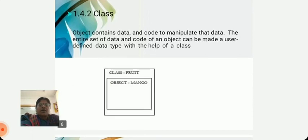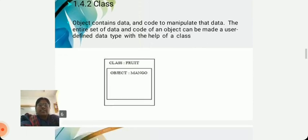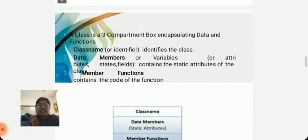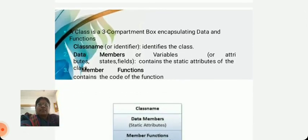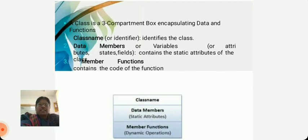Class. Objects contain data and code to manipulate the data. The entire set of data and code of an object can be made a user defined data type with the help of a class. Here, fruit is a class name and mango is an object name. A class is a three compartment box encapsulating data and functions: class name, data members, and member functions.